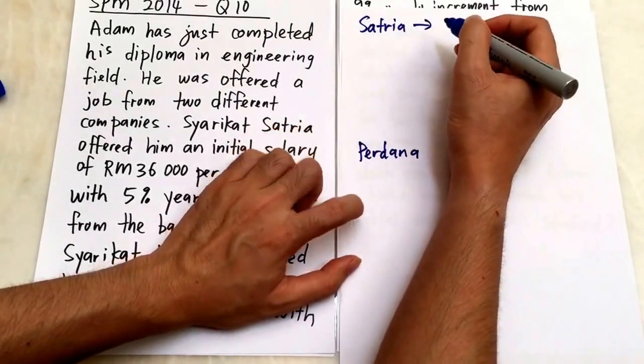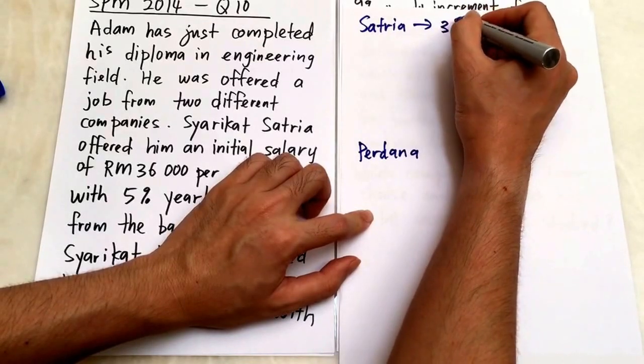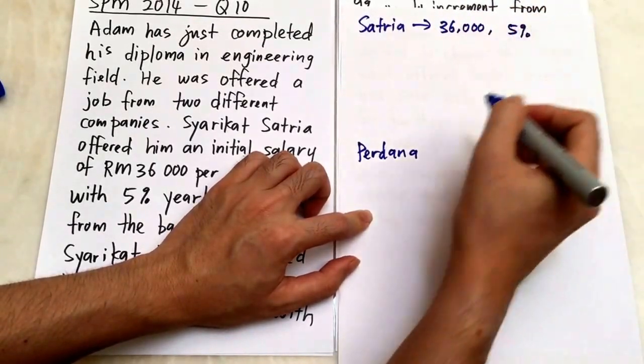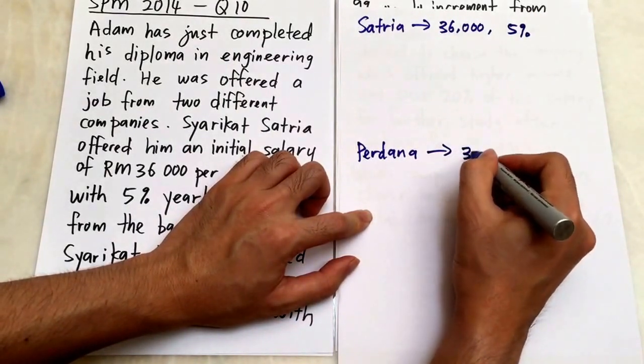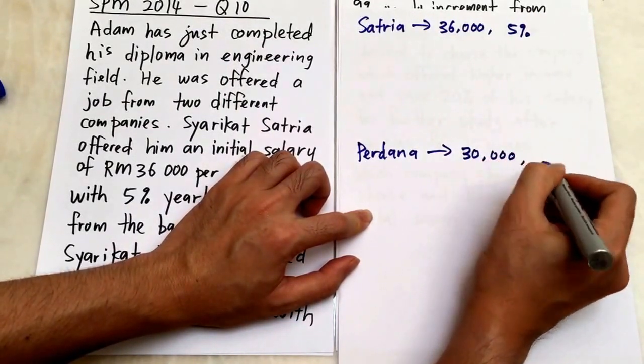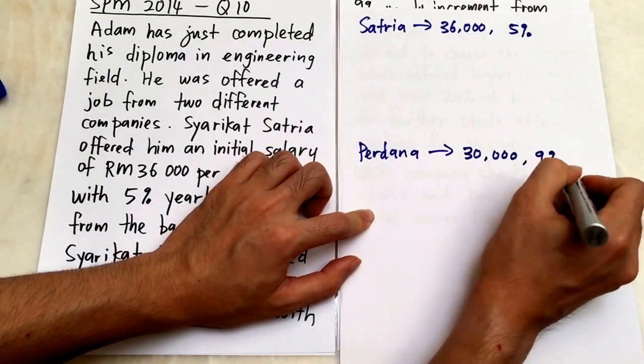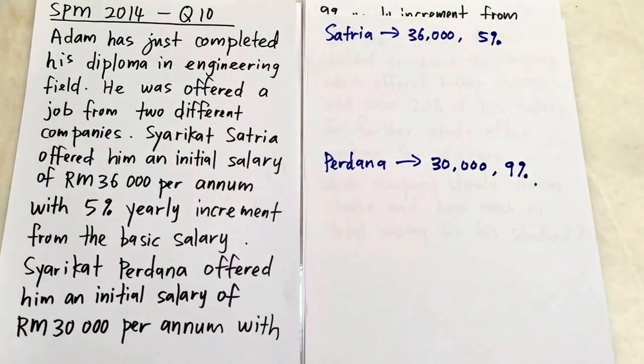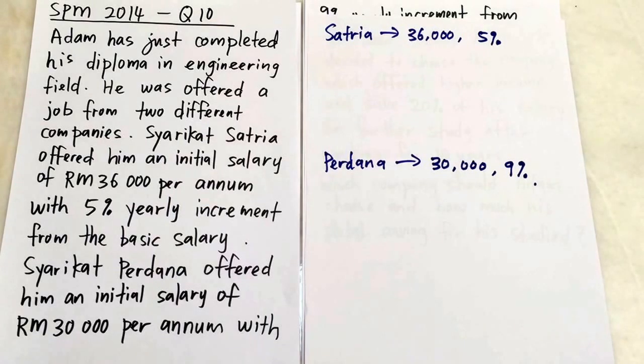We have two companies here. First is Satria and this is Berdana. This one offers 36,000 and 5%. This one offers 30,000 and 9%. I'm going to find which one is higher then multiply with 20%.